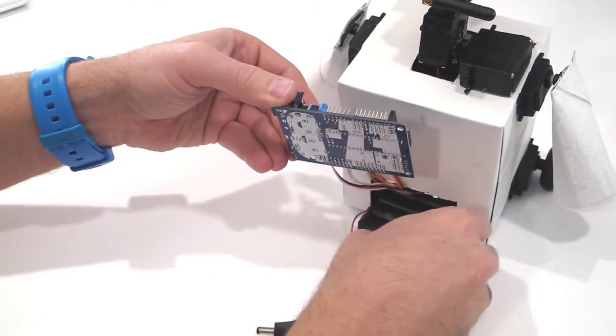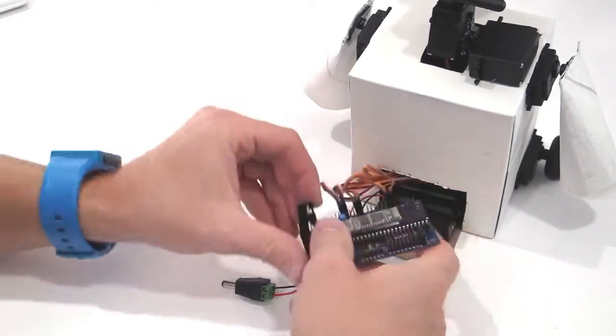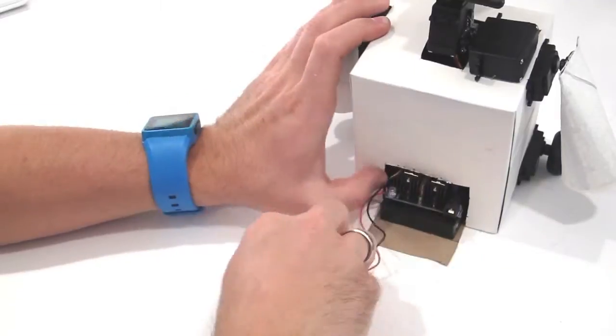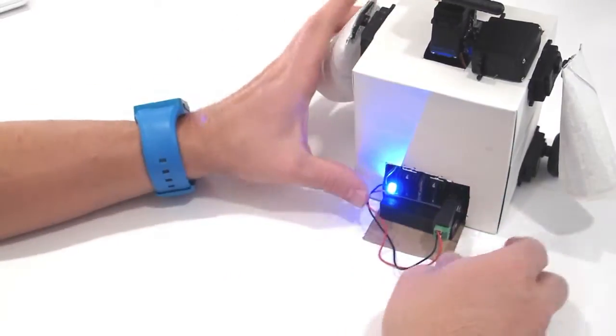Insert the battery pack upside down. Insert the EZ-B on top of the battery pack. The power connection is now easily accessible.